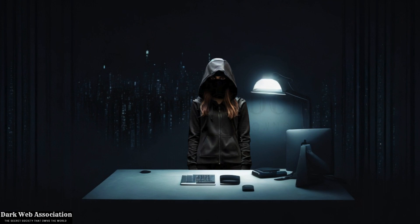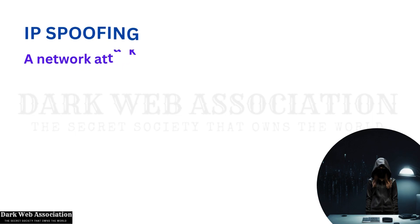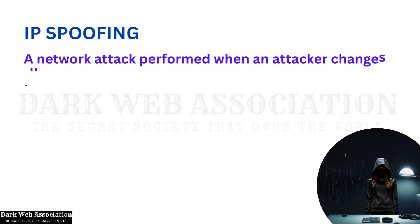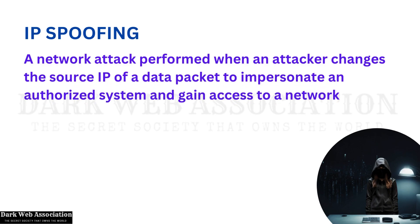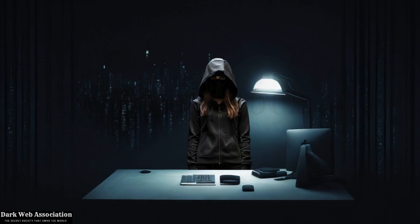Next, let's learn about another kind of network attack called IP spoofing. IP spoofing is a network attack performed when an attacker changes the source IP of a data packet to impersonate an authorized system and gain access to a network. In this kind of attack, the hacker is pretending to be someone they are not, so they can communicate over the network with the target computer and get past firewall rules that may prevent outside traffic.